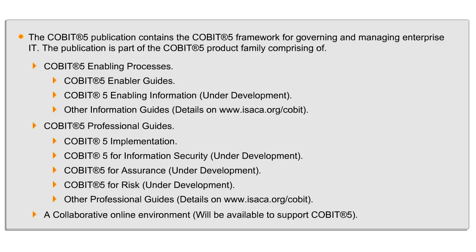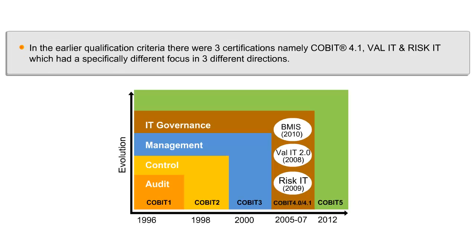Let's discuss what is new in this framework. In the earlier qualification criteria there were three certifications — COBIT 4.1, Val IT, and Risk IT — which had a specifically different focus in three different directions. With the introduction of COBIT 5, ISACA has come out with a comprehensive model that encompasses the best practices of all three frameworks, expanded into a holistic approach covering the entire IT organization with clear linkage to the business organization. In short, COBIT 4.1, Val IT, and Risk IT have been combined into one holistic framework, avoiding the need for a piecemeal improvement approach.